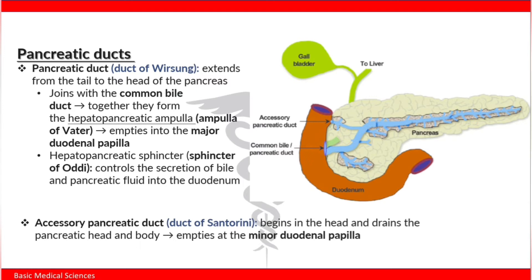The hepatopancreatic sphincter, or the sphincter of Oddi, controls the secretion of bile and pancreatic fluid into the duodenum. The accessory pancreatic duct, also known as the duct of Santorini, begins in the head and drains the pancreatic head and body.